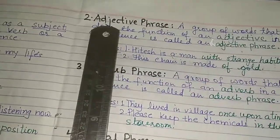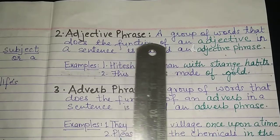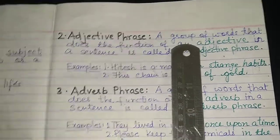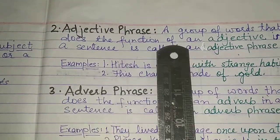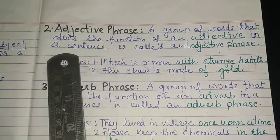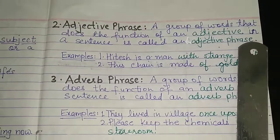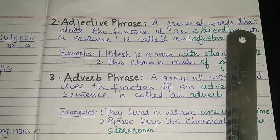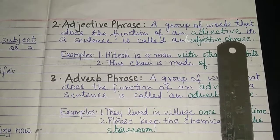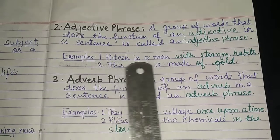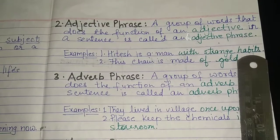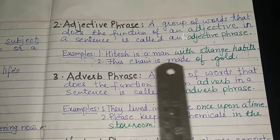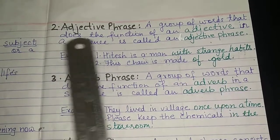Now come to the adjective phrase. A group of words that does the function of an adjective in a sentence is called an adjective phrase. A group of words when it functions as an adjective is said to be an adjective phrase. For example: 'Hitesh is a man with strange habits' — 'with strange habits' is an adjective phrase. 'This chain is made of gold' — 'of gold' is an adjective phrase.